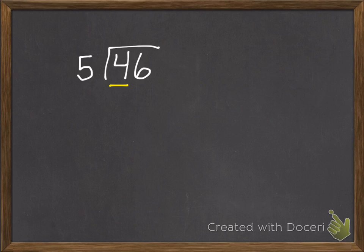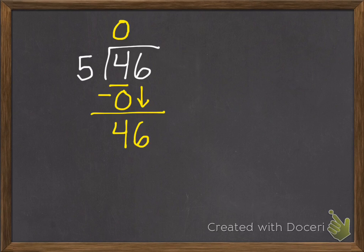If I have 5 groups and I only have 4 10s, I can't give each of them a 10 because I don't have enough. I need 5. So they all get 0 10s. 0 times 5 is 0. I didn't give any 10s out. So 4 subtract 0 is 4. Bring down my 6, and I have 46. You might notice, I just did a whole lot of work, and I ended up with what I started with, 46.